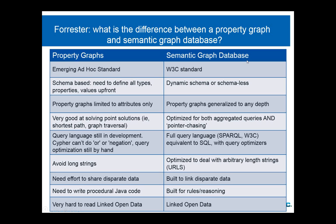Property graphs generalized to any depth — I explained that in great detail. Another important thing is that property graphs are really good at starting at a particular point and working through the graph to do graph analytics. In semantic graph databases we can do the same graph operations, but in practice people also want to do the regular queries you'd do with an SQL database. Triple stores are more like hybrids between SQL and graph databases — you can do aggregated queries like 'give me all people with gray hair who are two steps removed from this element.'